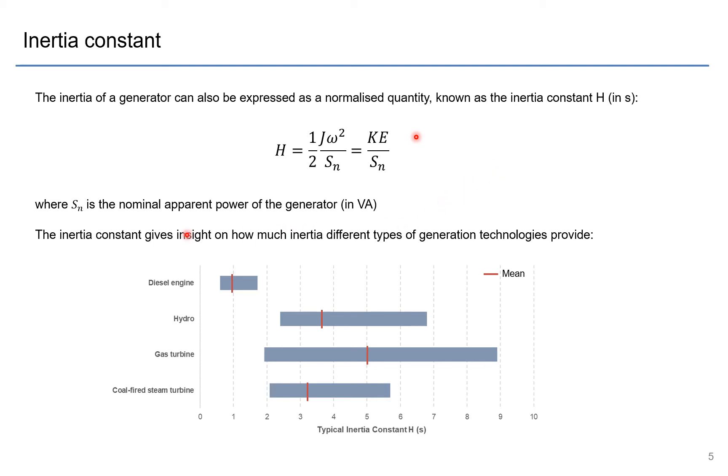So here we have a plot of typical inertia constants for different generating technologies, and we spoke before that diesel engines and combustion engines have quite low inertia. You can see here the range of inertia values is between 0.8 and 1.8, and on the other hand you might have gas turbines and steam turbines have quite high inertia constants.